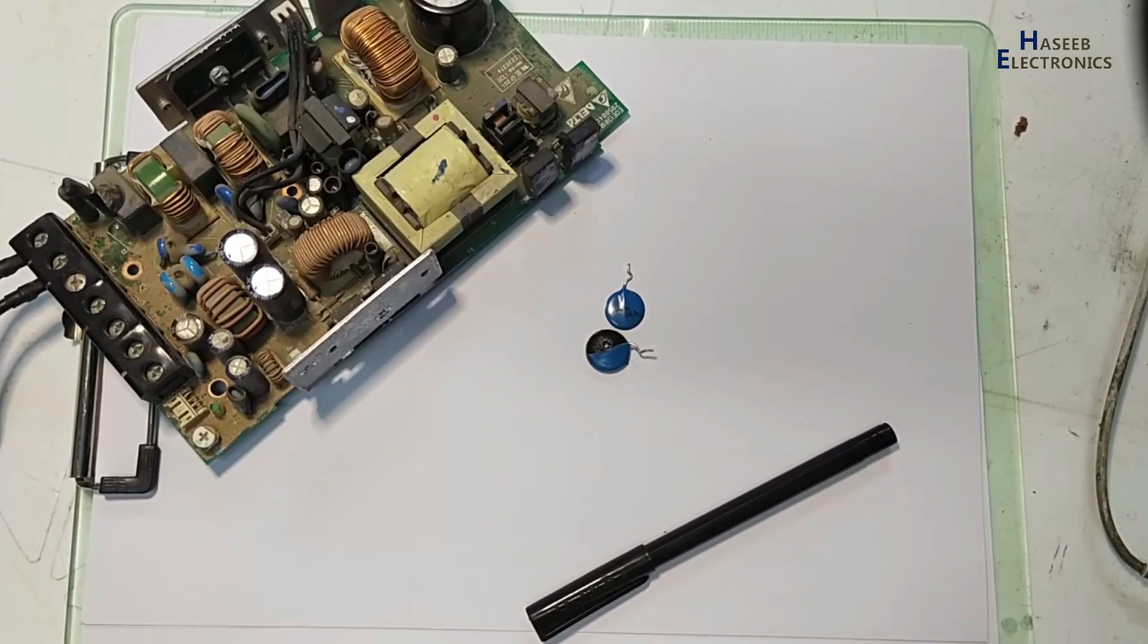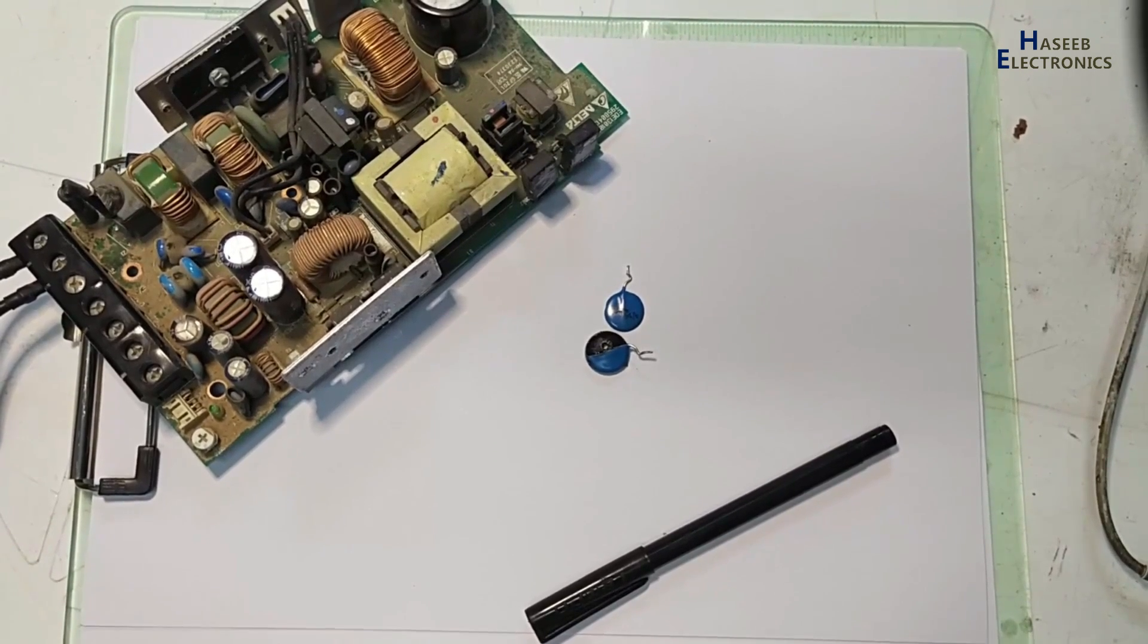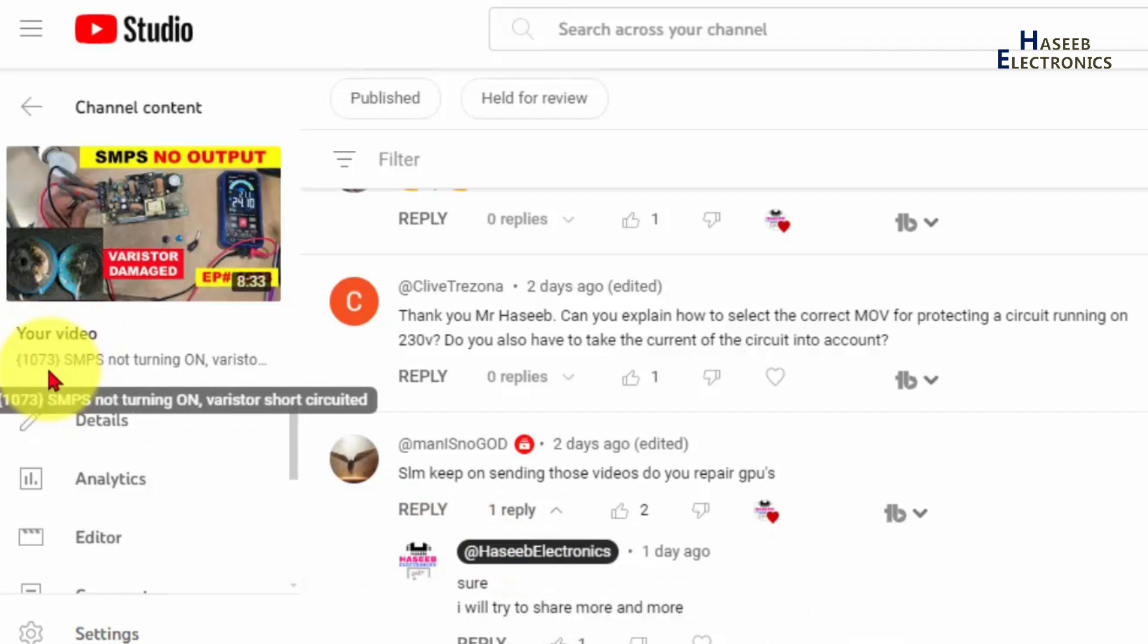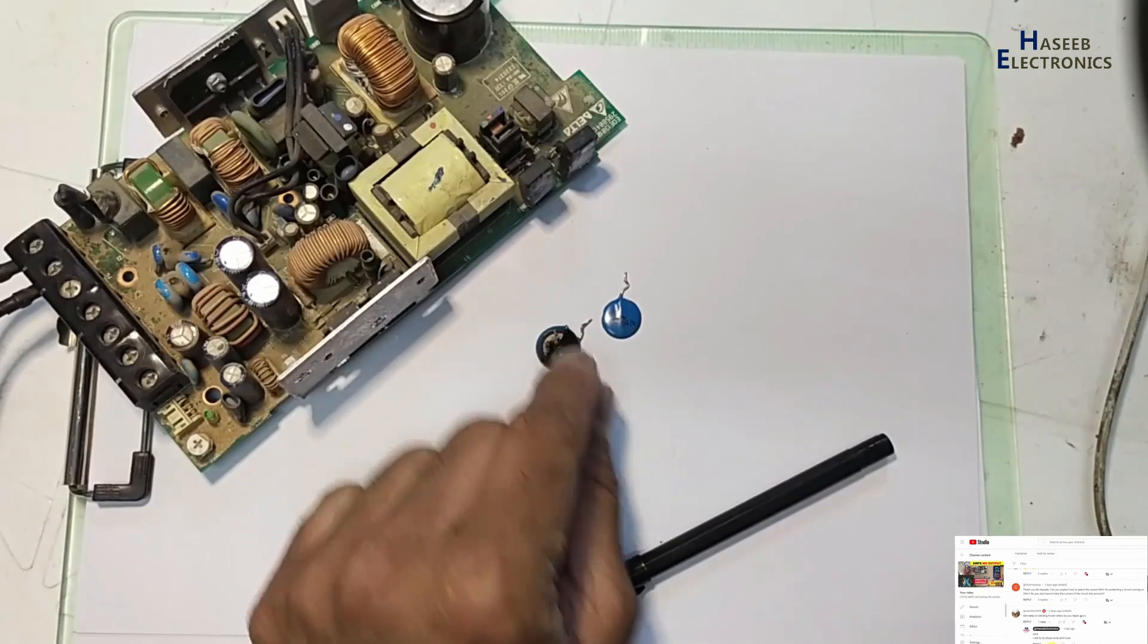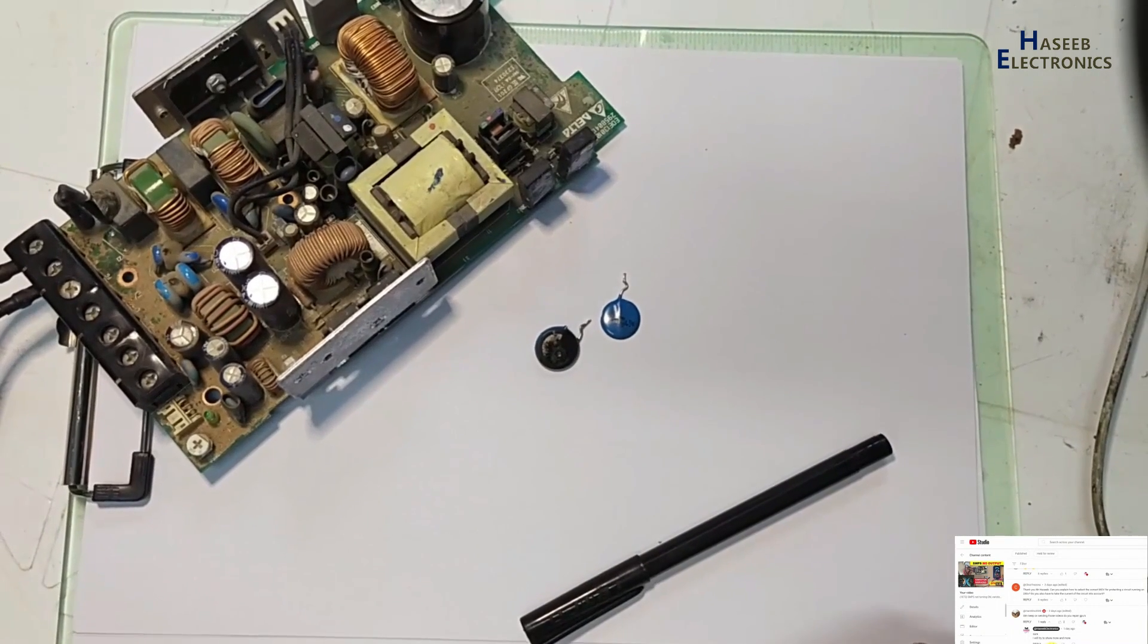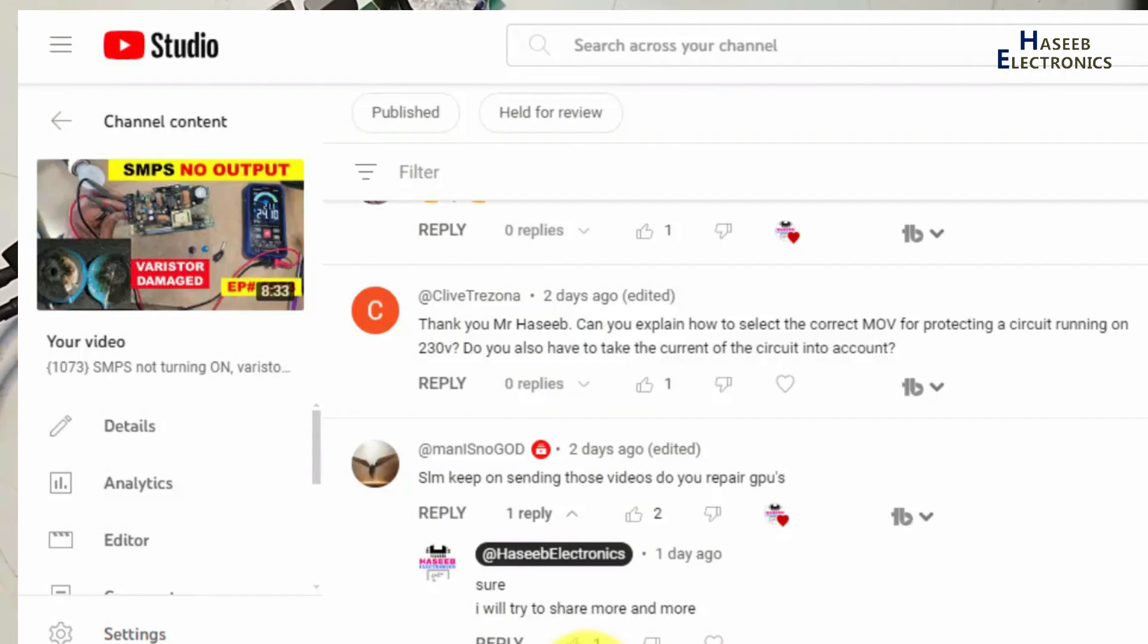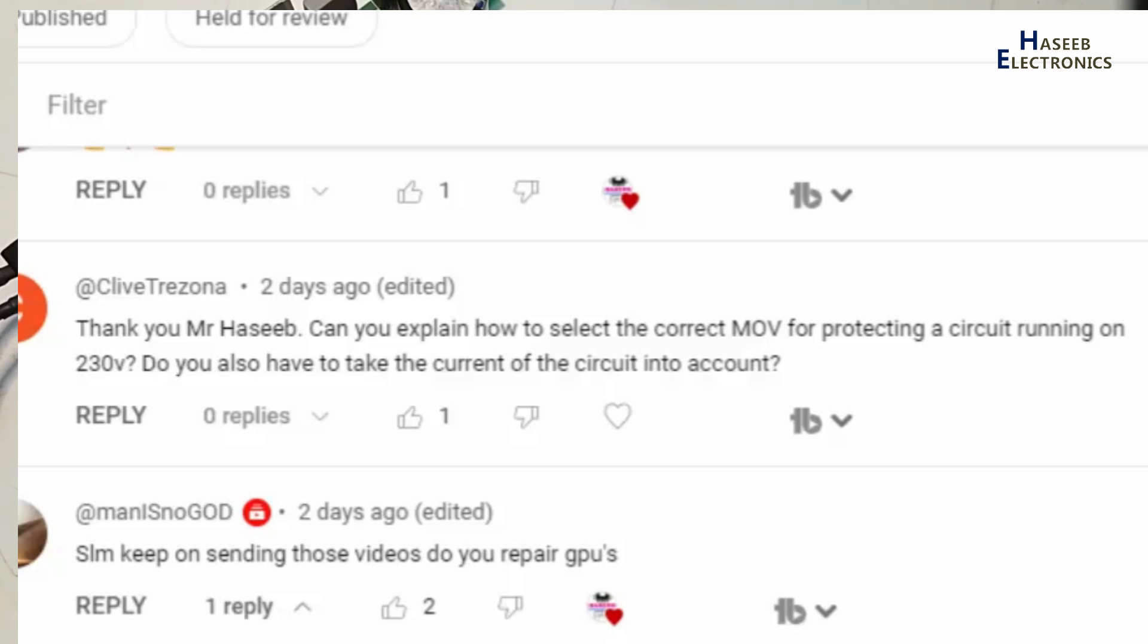Assalamualaikum. Welcome back to my channel. In video 1073, I repaired this Delta power supply and found this MOV varistor short-circuited. I received a comment from my viewer: Can you explain how to select the correct MOV for protecting circuits running on 230 volt? Do you also have to take the current of the circuit into account?